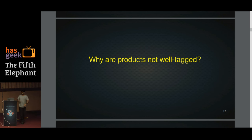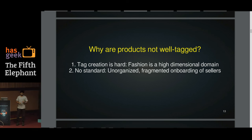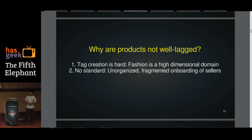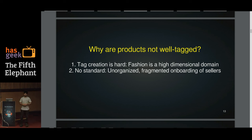These problems exist because fashion commerce catalogs are not well tagged. We saw examples of missing tags, mismatches between what you type and what you get, non-standard tags like 'casual' versus 'sports,' and lots of duplicates. So why are products not well tagged? There are primarily two reasons: the tag creation process itself is very complex, and there is no single standard you can use to tag these items. The ecosystem of commerce is distributed, so different sellers apply their own different standards.